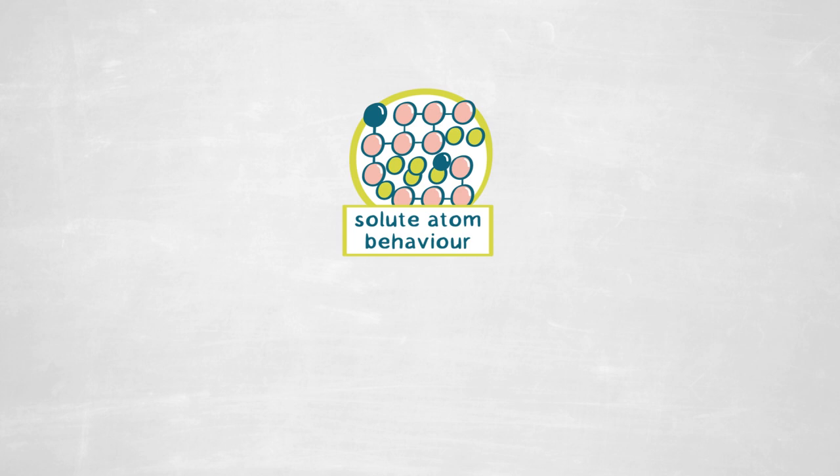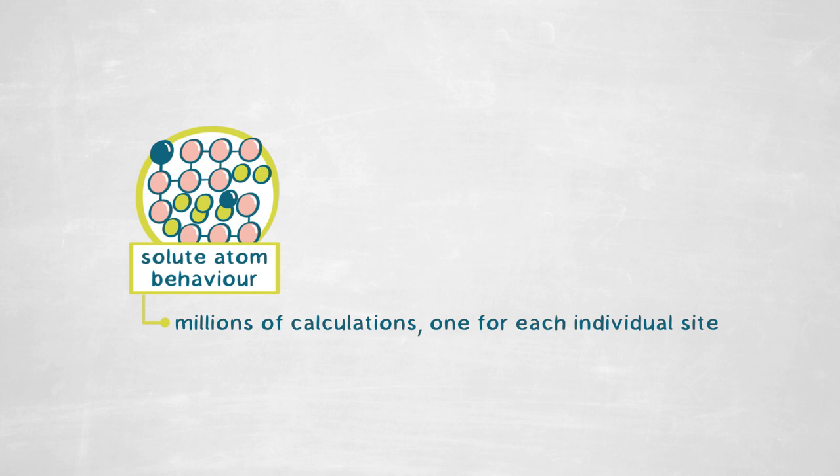That model came out in the 1970s and computing power wasn't what it is today. So what we've done is we've generated millions of these calculations for each individual site to measure how much it likes to be at the grain boundary compared to the bulk.